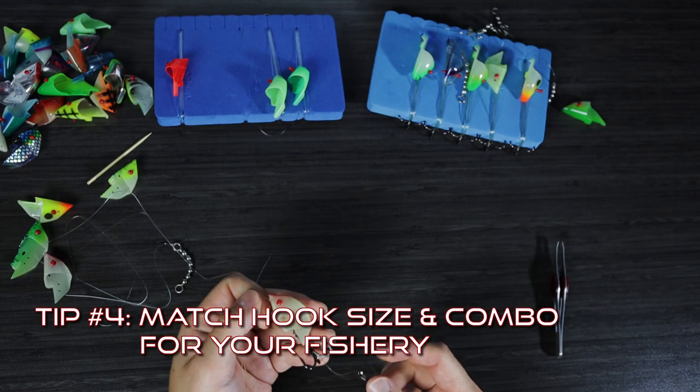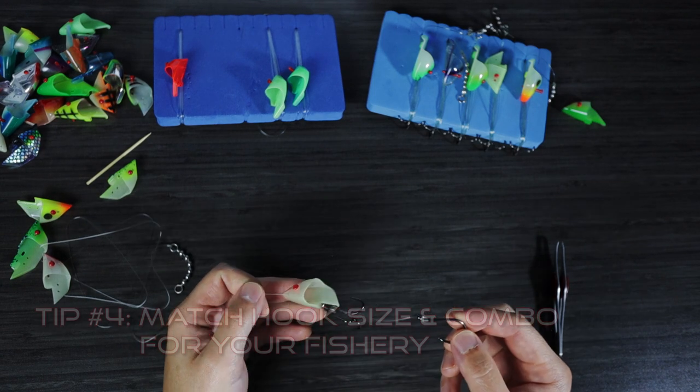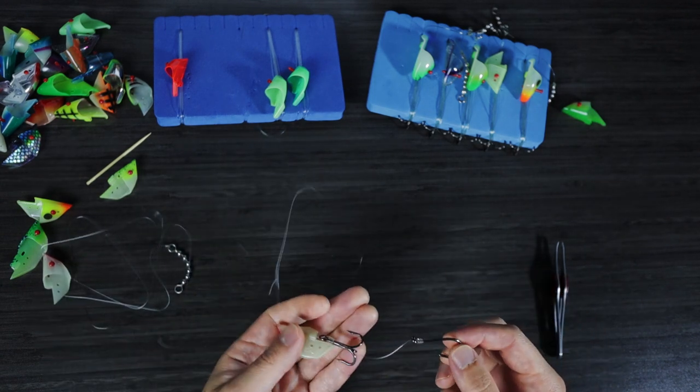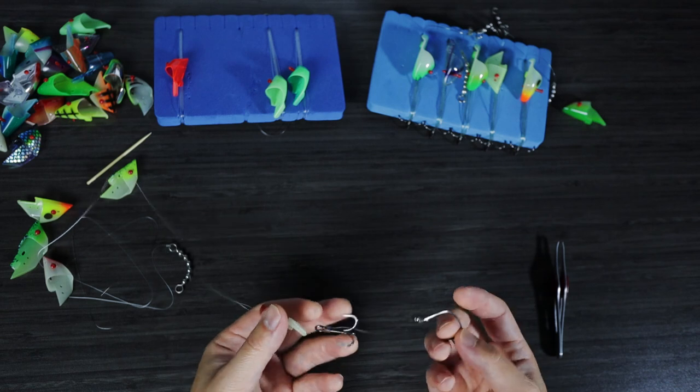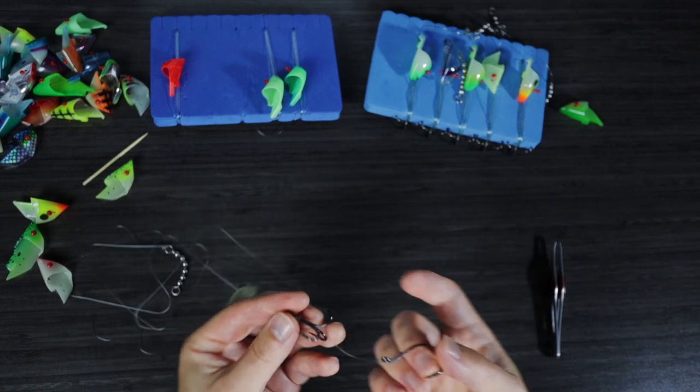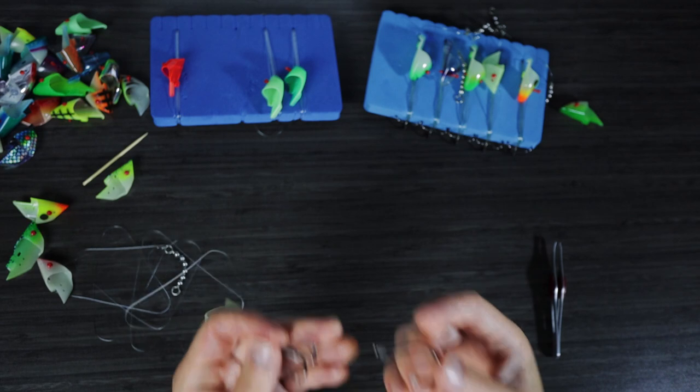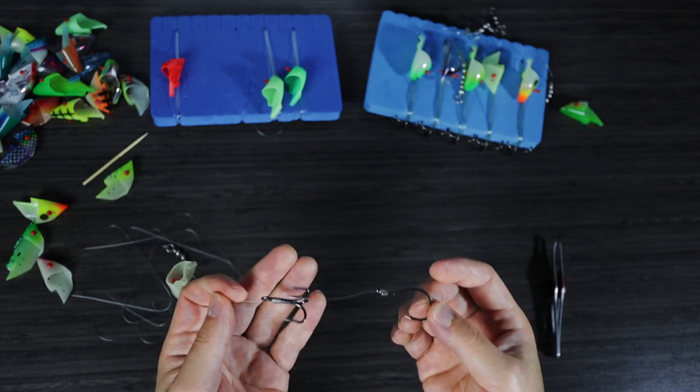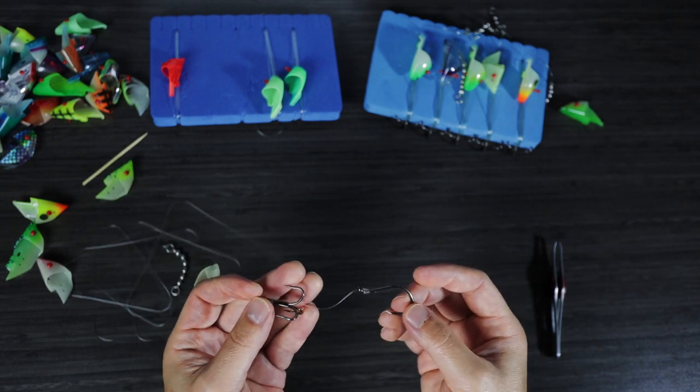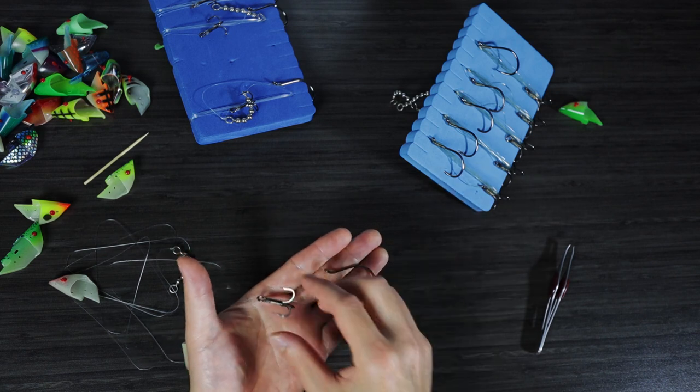Tip number four is selecting the right pair of hooks for your fishery. And I'll explain what I mean by that. So we typically run larger hooks, usually five aughts for a couple of reasons. One, so you're not bending the hooks and losing fish. And two, that we reduce the chance that we're not hooking the fish too deep in the mouth.